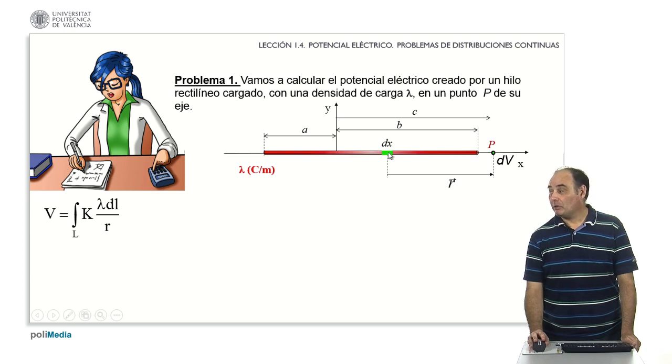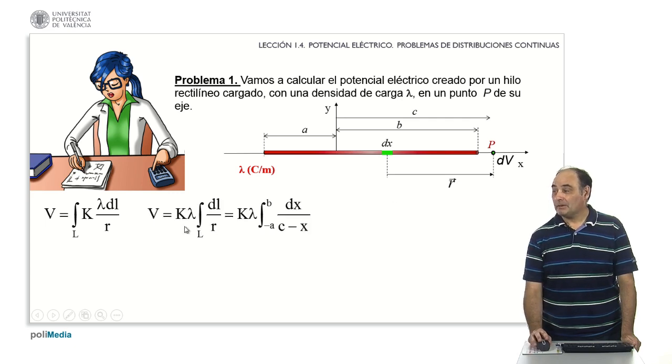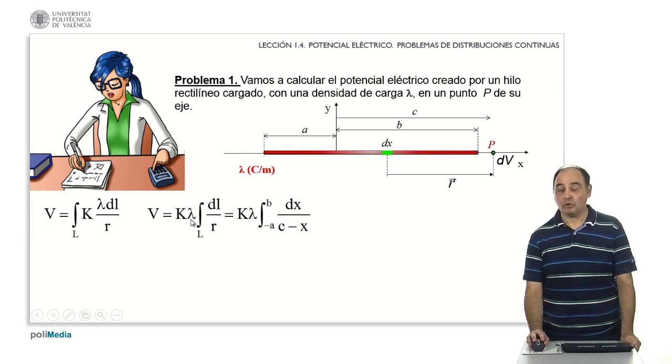The vector r that we have to use to calculate the potential at p is the one that I have represented here, whose modulus is what interests me. Using this expression we can take k and lambda as constants outside the integral.